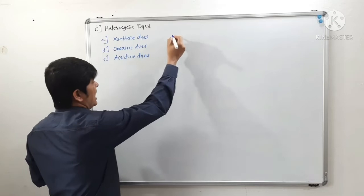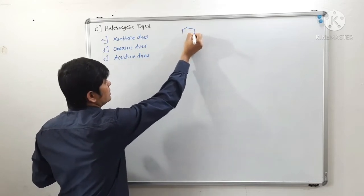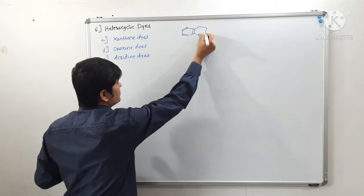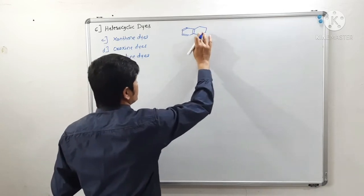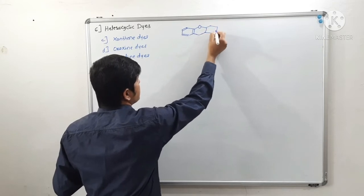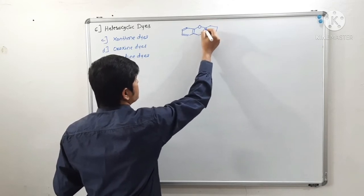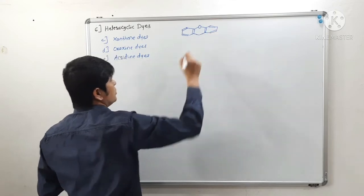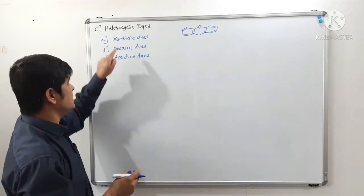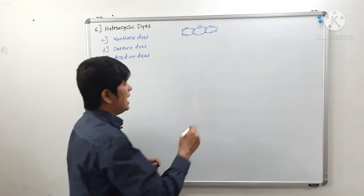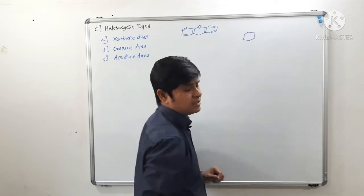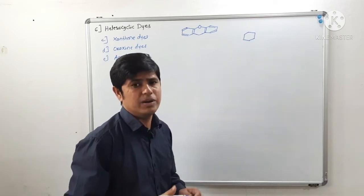Xanthin dyes have a basic core structure called xanthin. This type of basic structure is present in all xanthin dyes. Examples of xanthin dyes are fluorescein and eosine. These are the examples of xanthin dyes.